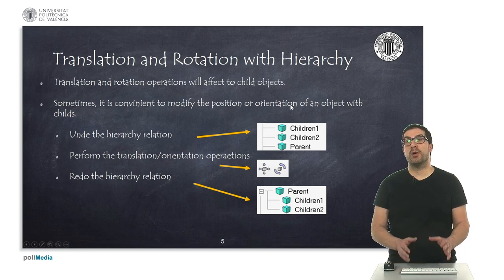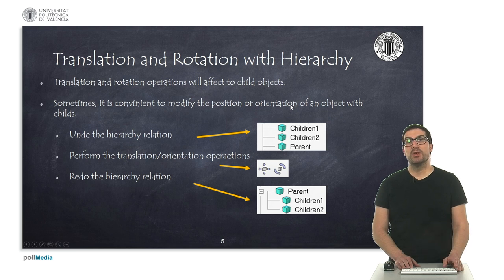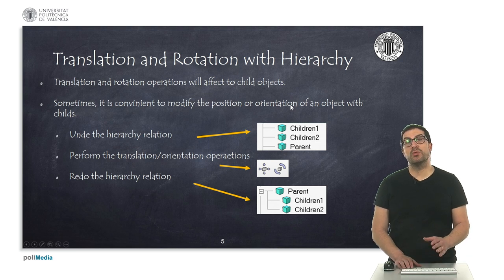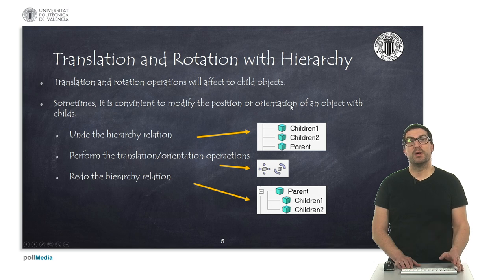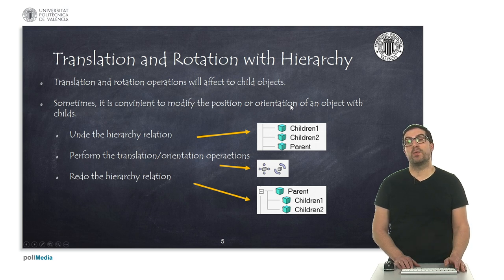Sometimes we need to move an object that has children but only that object, perhaps because its position is not correct. In that case, in order to not affect the children, what we must do is to first undo the hierarchy relationship, then perform the translation or rotation operation, and then redo the hierarchy relationship.